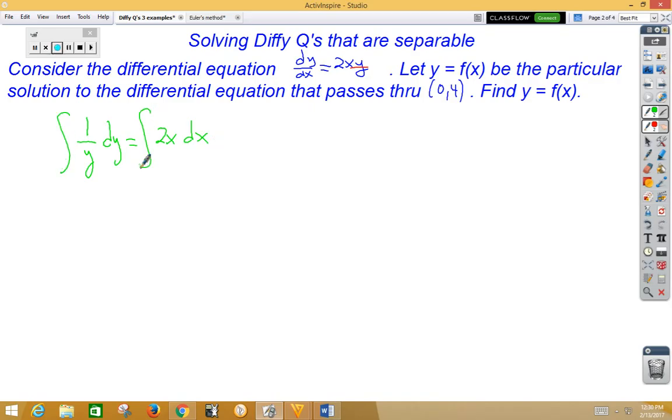Now I'm going to integrate. Well, 1 over y is the natural log of the absolute value of y, and 2x would be x squared plus c.